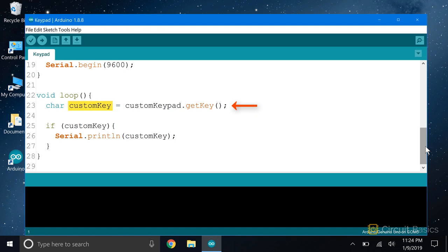In the loop function we declare a char variable named custom key and set that equal to the function getKey from the instance of our custom keypad object. Now we use an if statement with the custom key variable inside. The getKey function returns the value of the key whenever a key is pressed, and that will be stored in the custom key variable. So that will make the condition inside the if statement true, and the program will enter the if statement every time a key is pressed. Inside the if statement we print the custom key variable to the serial monitor.